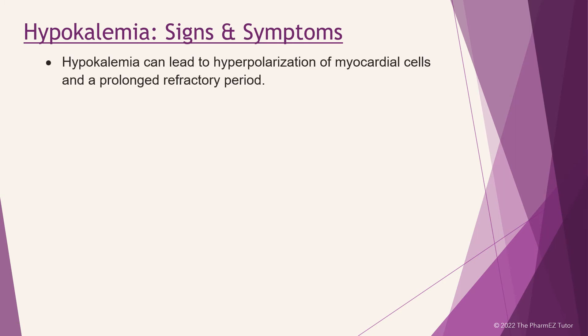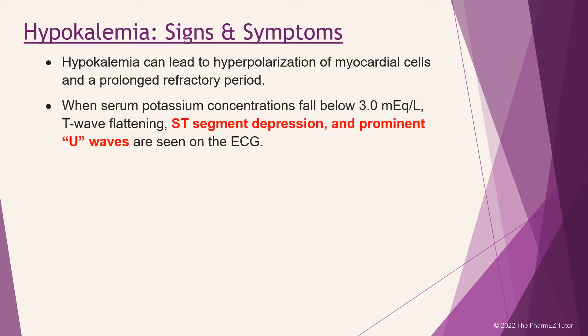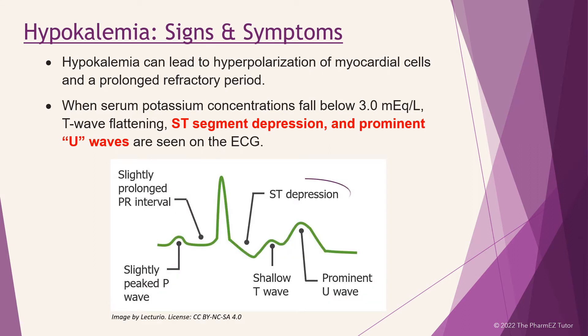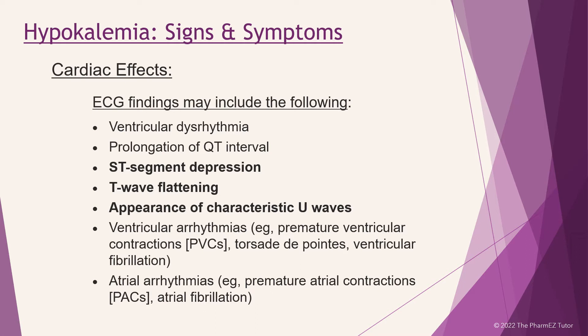Hypokalemia can lead to hyperpolarization of myocardial cells and a prolonged refractory period. When serum potassium concentrations fall below 3, T-wave flattening, ST-segment depression, and prominent U-waves are seen on the ECG. You can see here the ST depression that occurs on the ECG with hypokalemia and the development of a prominent U-wave. Any of the following ECG findings may occur.